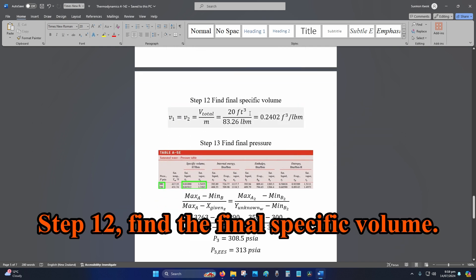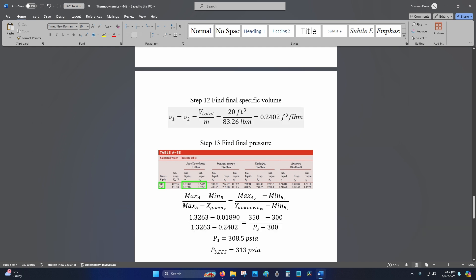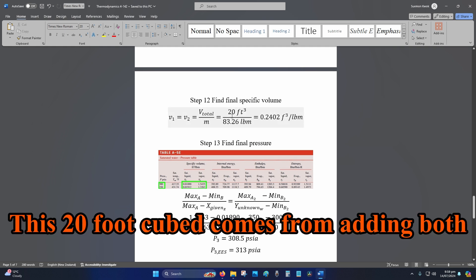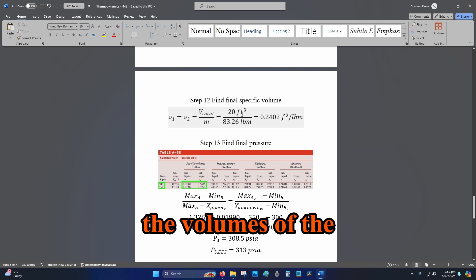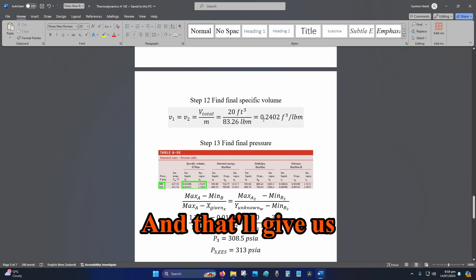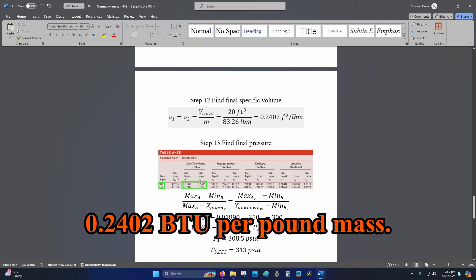Step 12, find the final specific volume. So, V1 is equal to V2. So, the total volume divided by mass. This 20 foot cubed comes from adding both the volumes of the tank. Dividing by the mass. And that will give us 0.2402 foot cubed per pound mass.